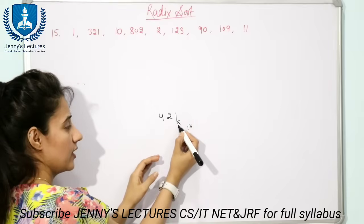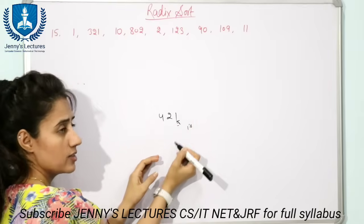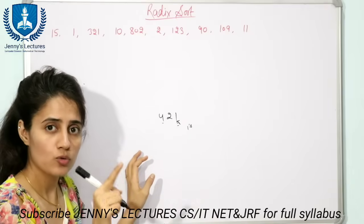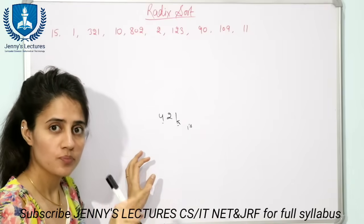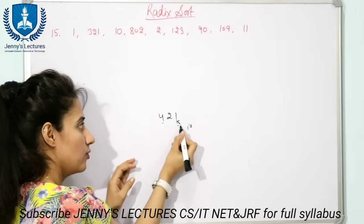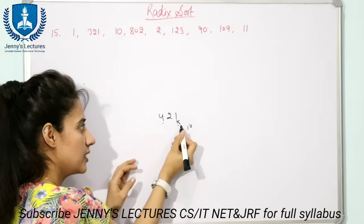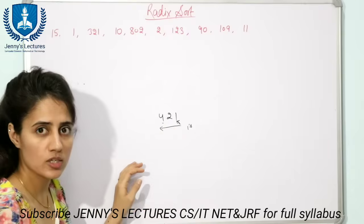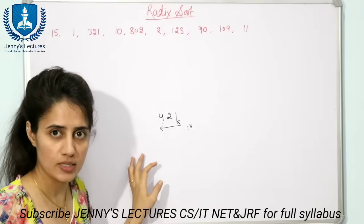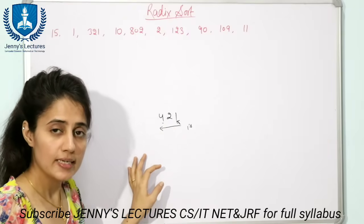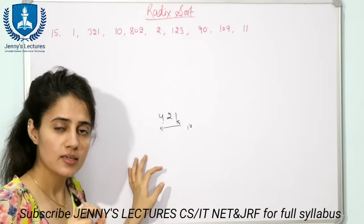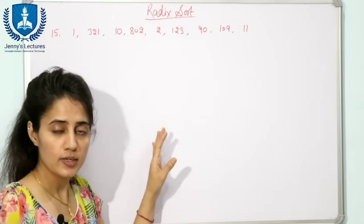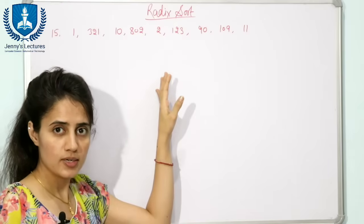We are going to start sorting from the least significant digit. The least significant digit is on the right side and the most significant digit is on the left side. We are going to start from the least significant digit and move towards the most significant digit, digit by digit.